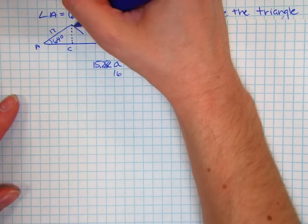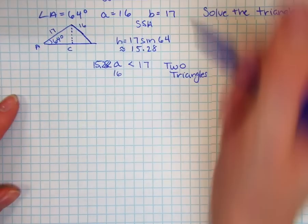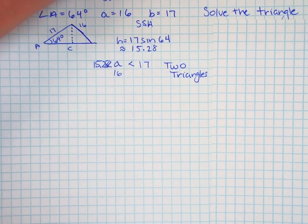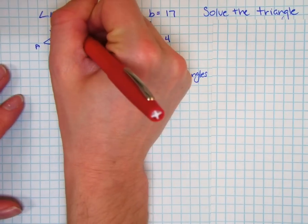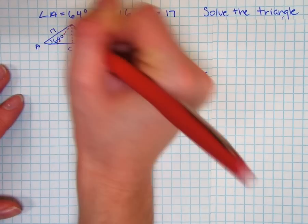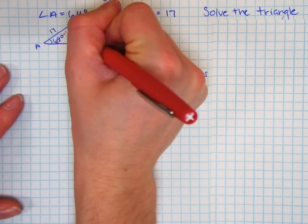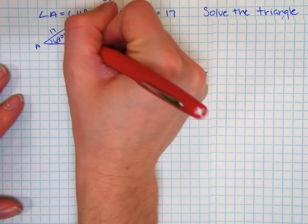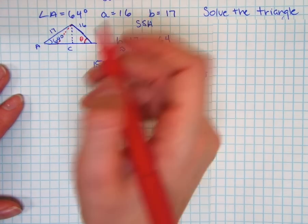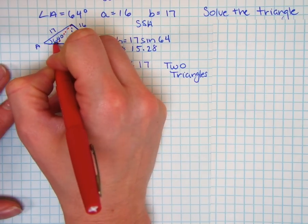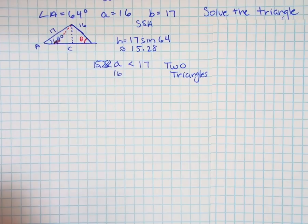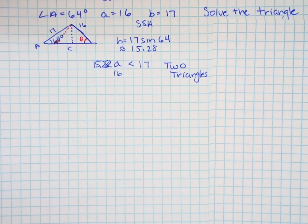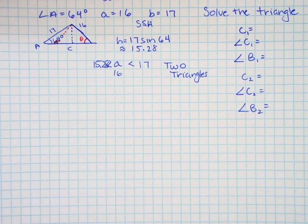So in drawing, either we have side 16 attaching here on one side, or not drawn very easily to see it, but side 16 on the other side as well. So we have two options for our triangles. Either we have our angle theta here, or unfortunately I have to draw over my 64, or that angle is going to be on the other side. So we're solving for two different triangles here, so I have space on the side for my two different answers.